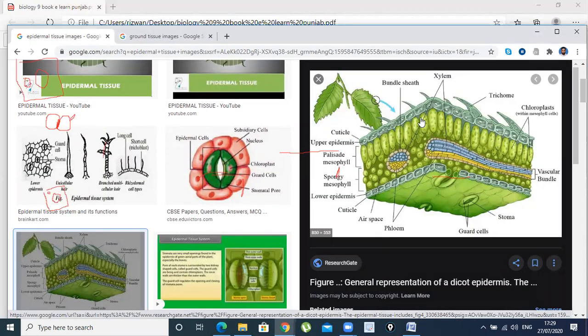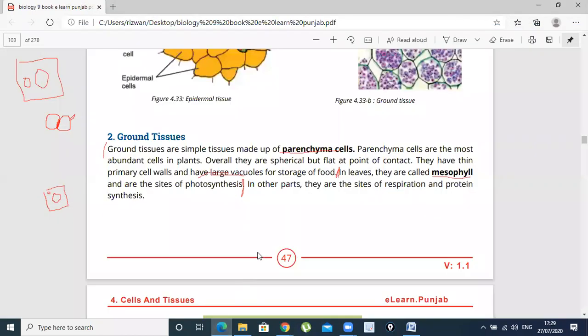If you look at the leaves, these are mesophyll cells—ground tissue types. These mesophyll cells have chloroplasts, and because of this, as written in the book, they do photosynthesis.